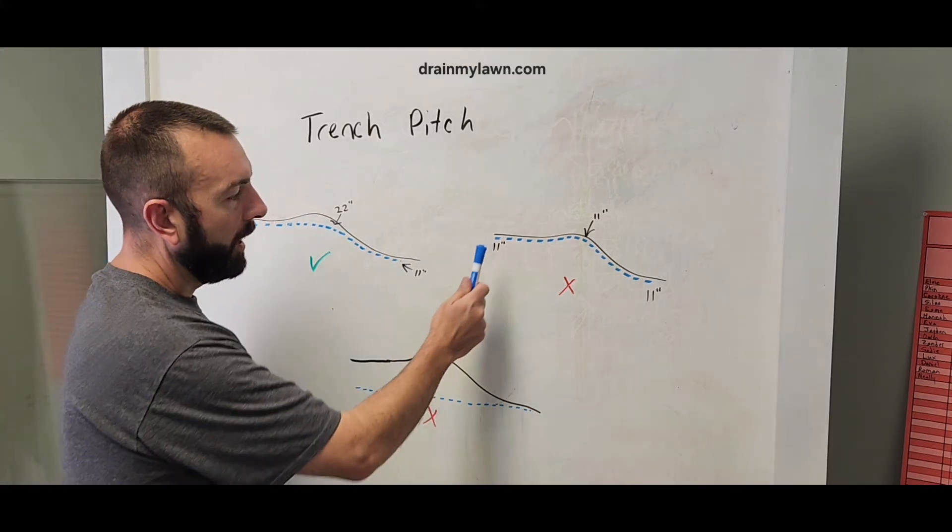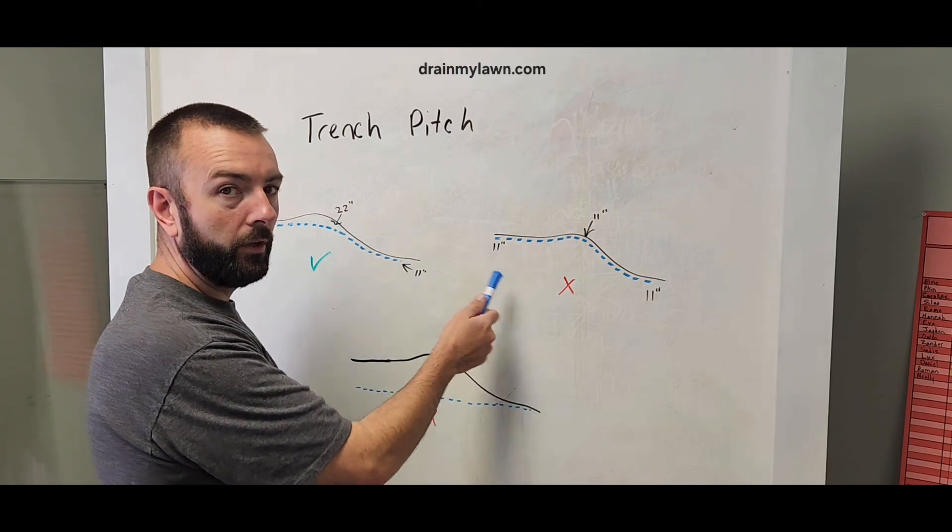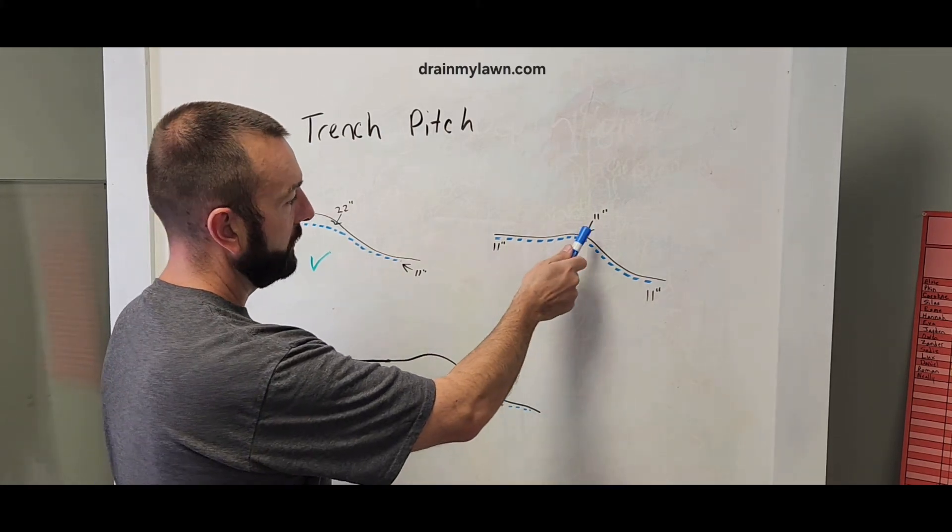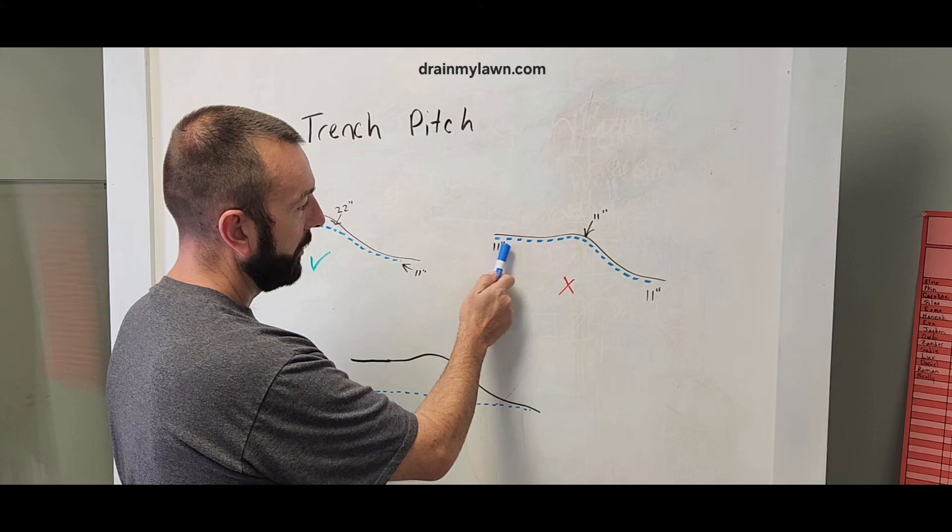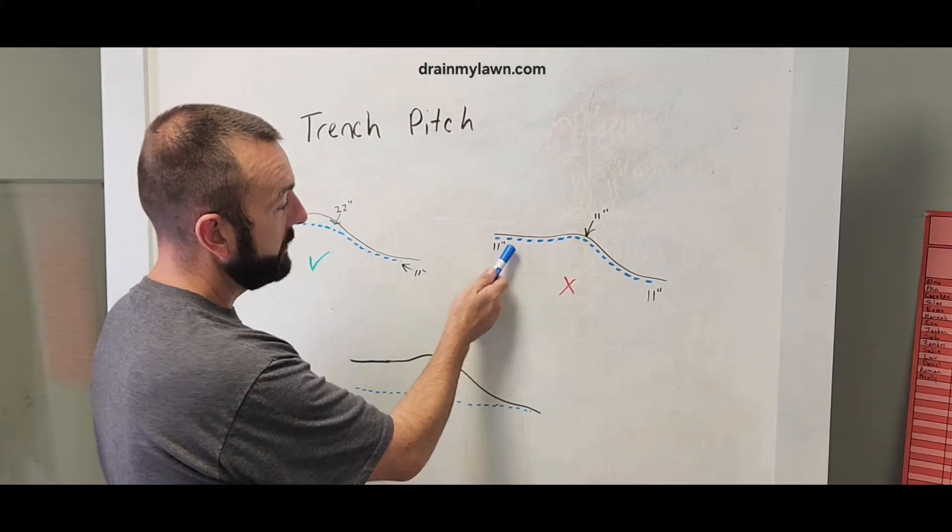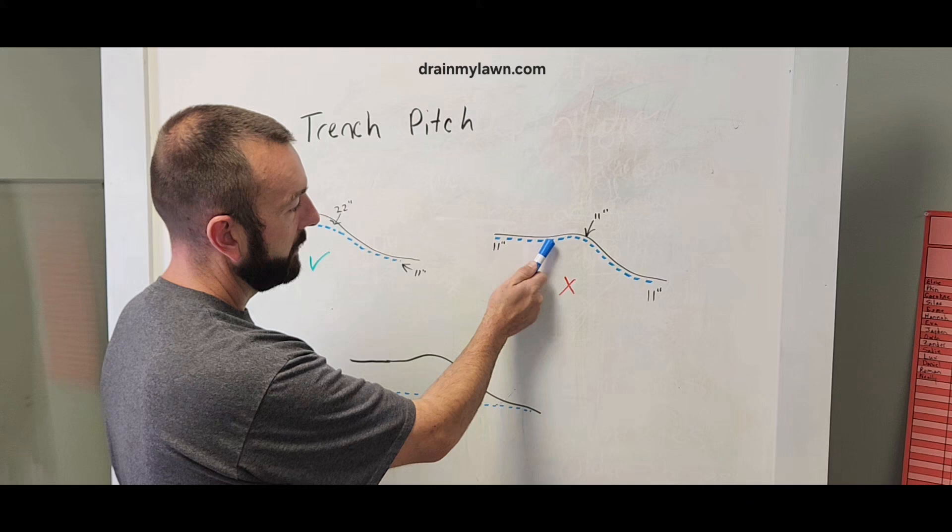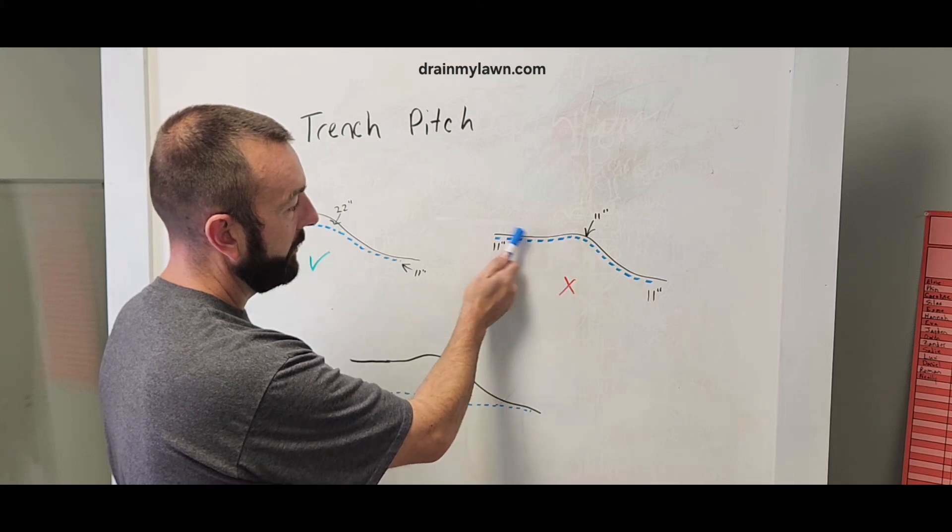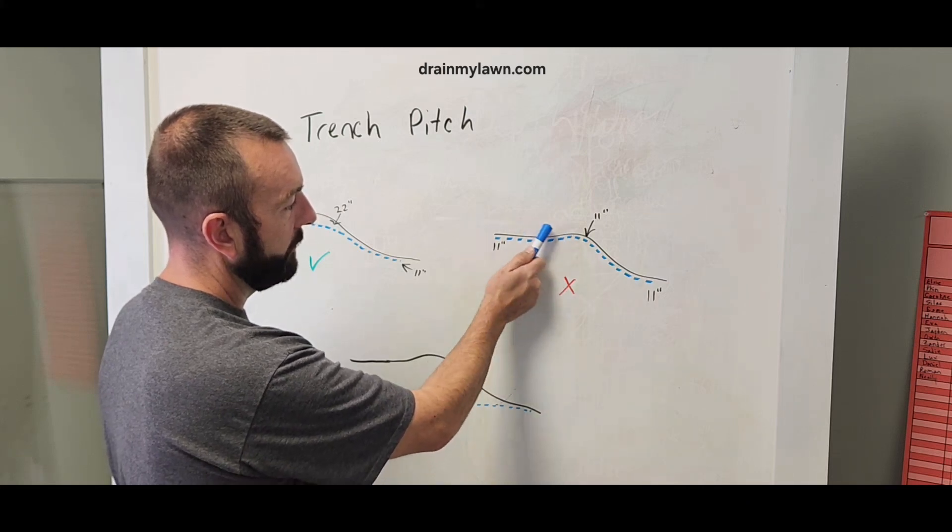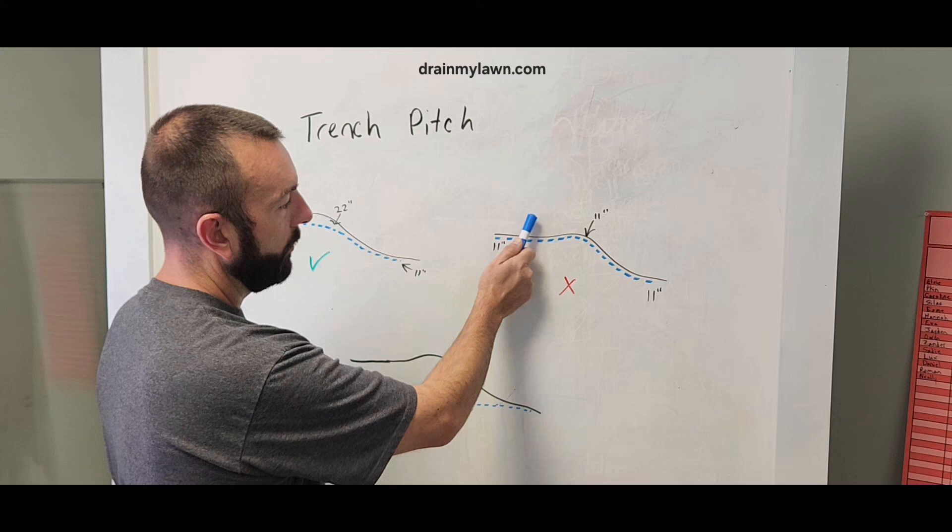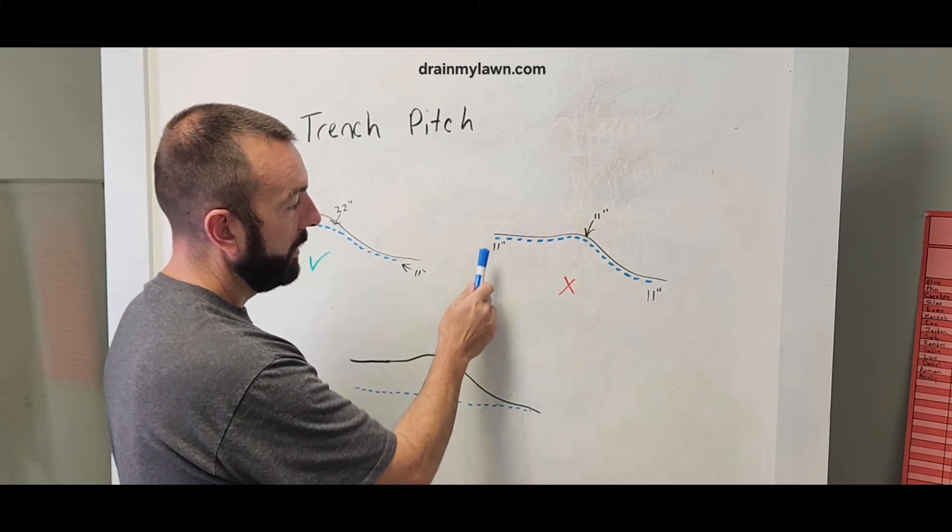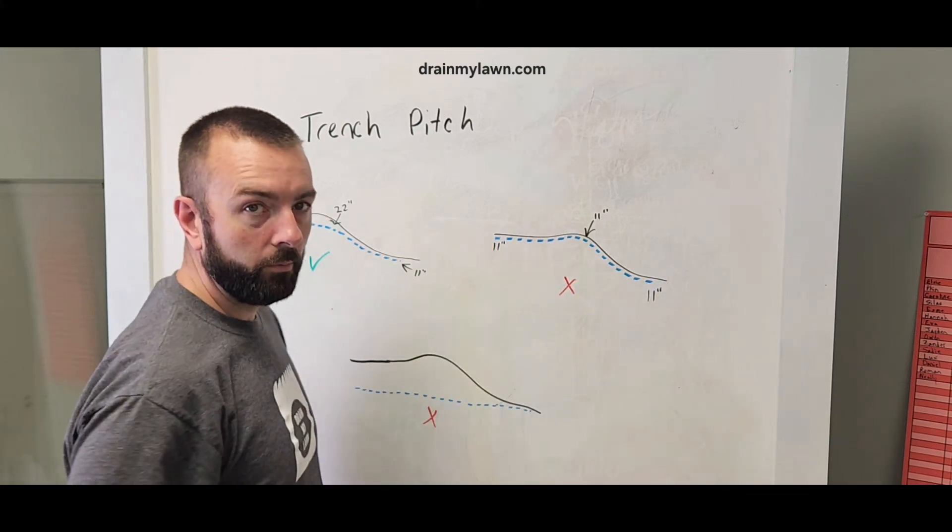This is the most common mistake that people do. They'll just run their trencher 11 inches deep, 11 inches deep, 11 inches deep. Problem is it went uphill. In this situation, none of this water is going to drain because it's going uphill. This is going to be higher than everything over here, so this is just going to fill with water. This is where most people make the mistake.